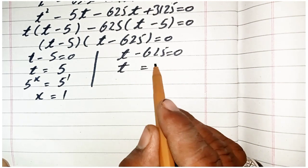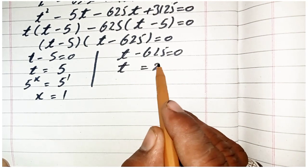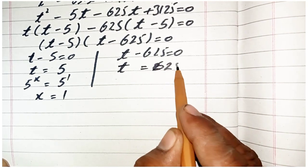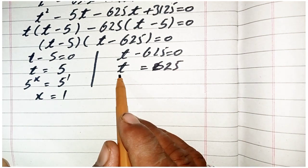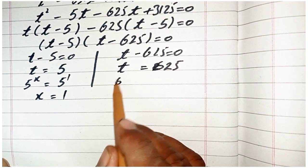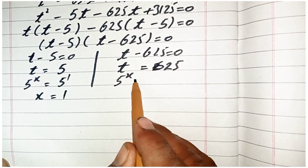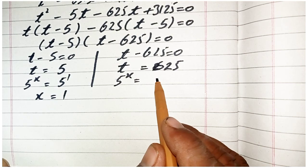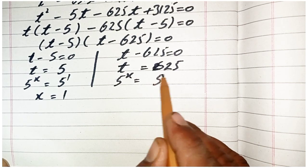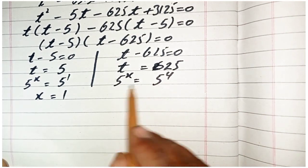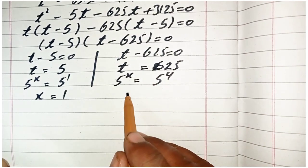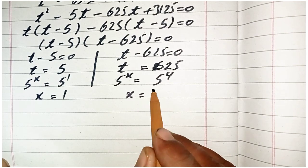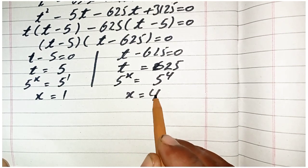Taking t minus 625 equal to 0 gives t equal to 625. The value of t equals 5 power x, and since 625 equals 5 power 4, we write 5 power x equal to 5 power 4. The base is the same, so the power is also the same, giving x equal to 4.